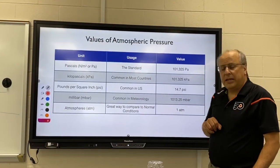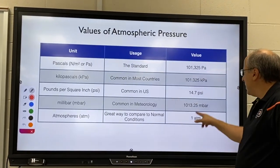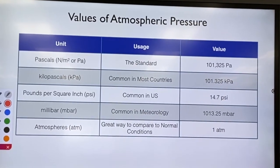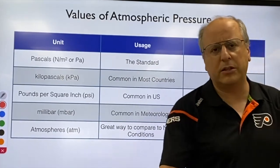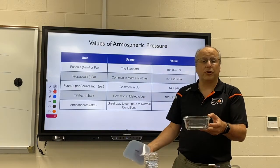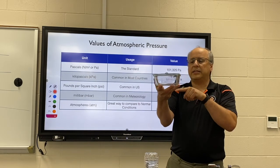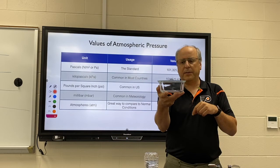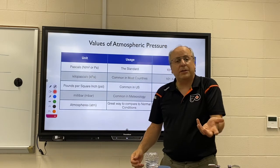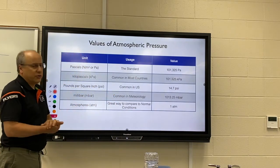In meteorology, weather agencies like the National Weather Service often give pressure in millibars. Sometimes you'll describe atmospheric strength in terms of atmospheres — our normal pressure is one atmosphere. If I push down on this container, the pressure inside becomes less than one atmosphere, maybe 0.9 atmospheres. If something were at two atmospheres, that's twice as strong as our atmosphere. So there are a bunch of different ways of measuring atmospheric pressure.